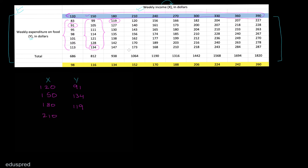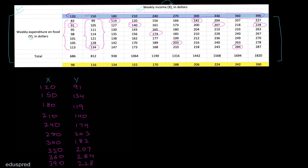For x equal to 210, let's say we select 140. For x equal to 240, we select 174. We do the same for the other x values as well. I have completed the sample data and this is how it looks.